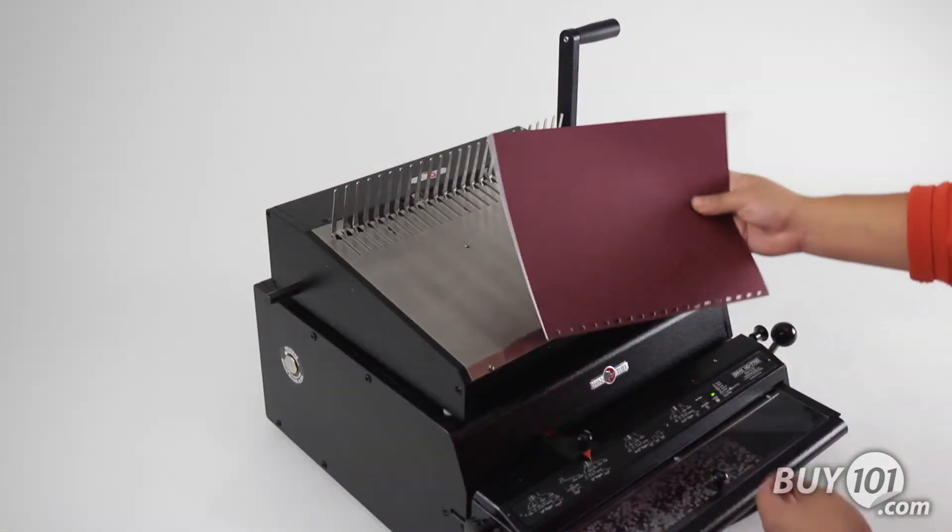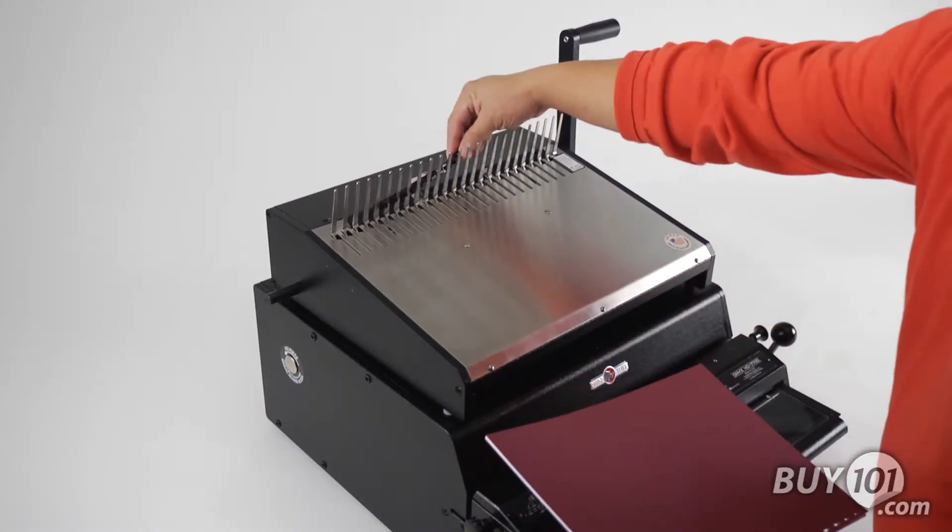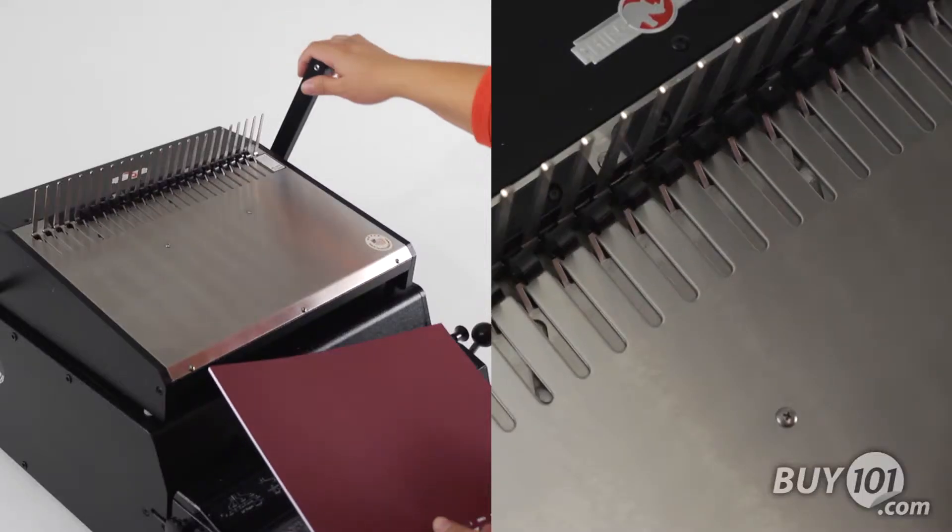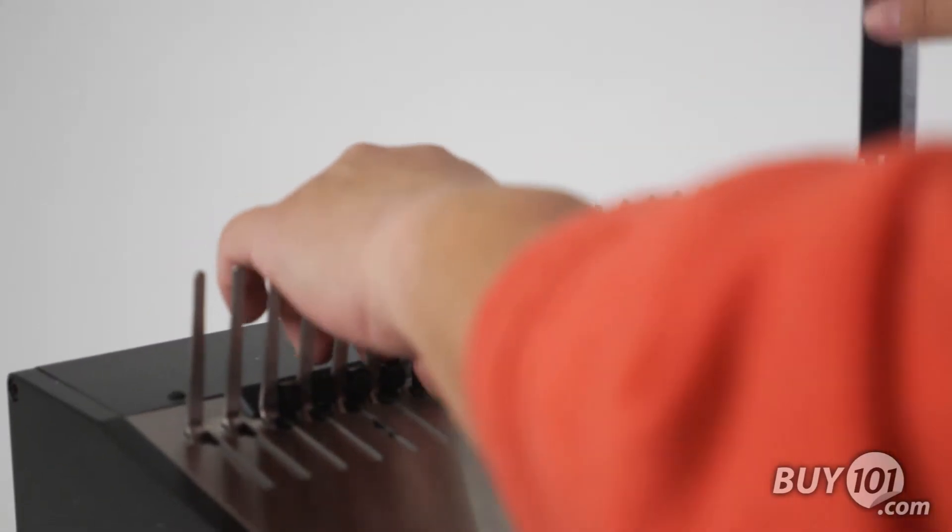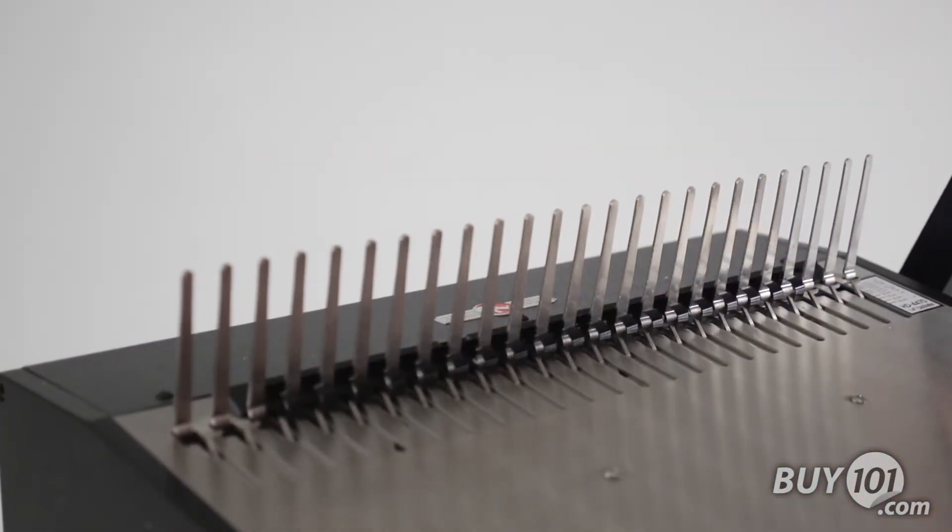Once your project is punched, drape the desired comb over the teeth of the comb opener, then pull the handle. The HD4470 can handle elements from a quarter inch to two inches in diameter and up to 14 inches in length.